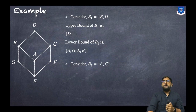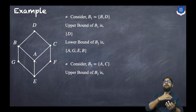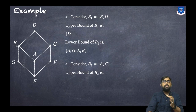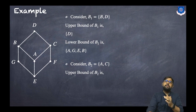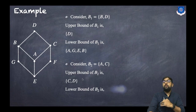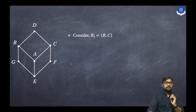Now consider set B2 = {A, C}. For upper bounds, can we go from A to B? Yes. From C to B? No — so B is cancelled. Can we go from A to D and C to D? Yes — so D is an upper bound. Among set elements, C is the upper bound. So the upper bounds are C and D. For lower bounds, can we go from E to A and E to C? Yes — so E and A are the lower bounds.